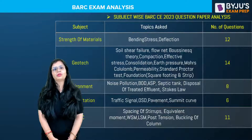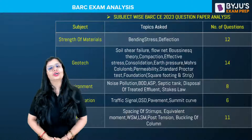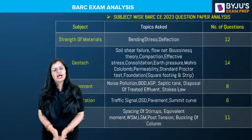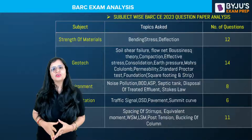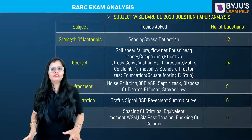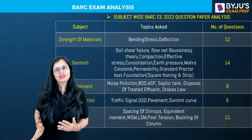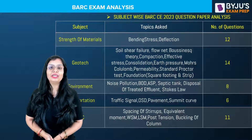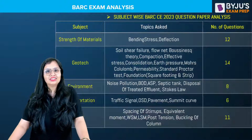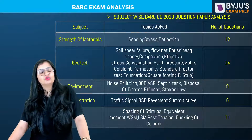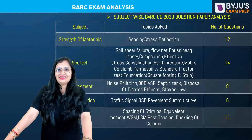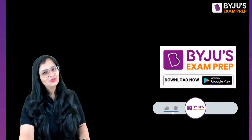Let me tell you in advance that once you qualify this paper, whether you're getting 300 marks or cutoff marks, everybody is the same in front of the interview panel. So be ready for the interview and prepare for it. When I asked students, most have attempted around 40 to 45 questions, with many saying 42 to 45, and they're confident that at least 40 would be correct. There might be chances of a lower cutoff this year, but last year the cutoff for Civil was 143. Let's wait for the BARC results. Thank you so much — if you haven't subscribed to our channel, please do so.